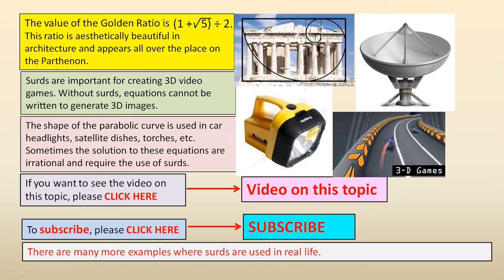The value of the golden ratio is 1 plus the square root of 5 divided by 2. This ratio is aesthetically beautiful in architecture and appears all over the place on the Parthenon.